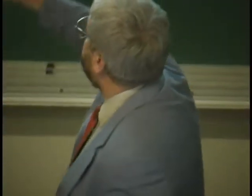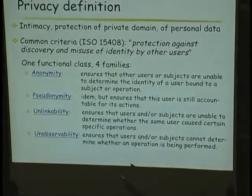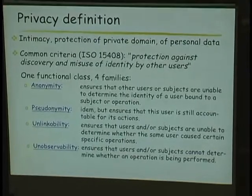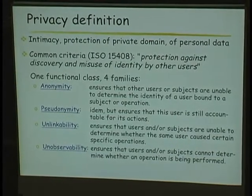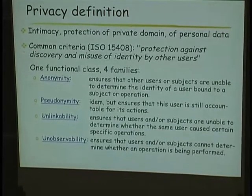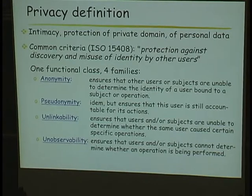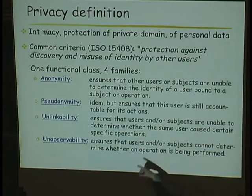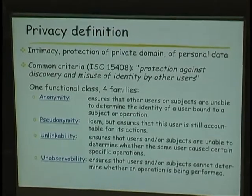Unlinkability should ensure that users or subjects cannot determine whether or not the same user has made several operations. Unobservability means that other users cannot know even if an operation is running — nothing is visible. These are four levels not necessarily directly linked to one another, except for pseudonymity and anonymity. For the other two there is no direct relationship, except that if perfect unobservability were implemented, then nobody would know anything.